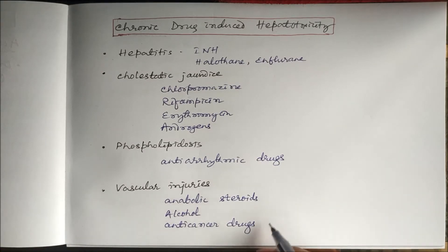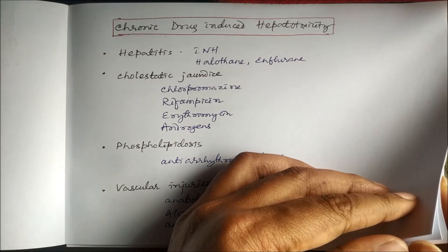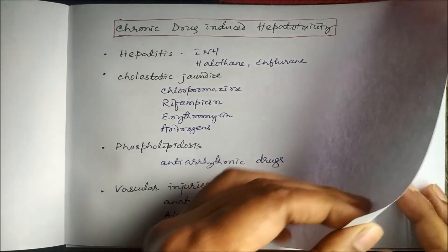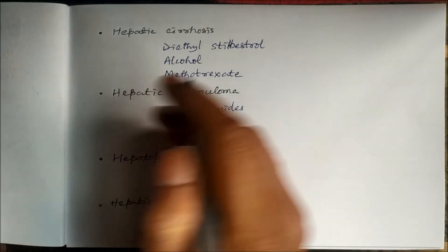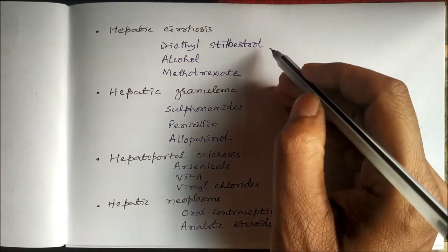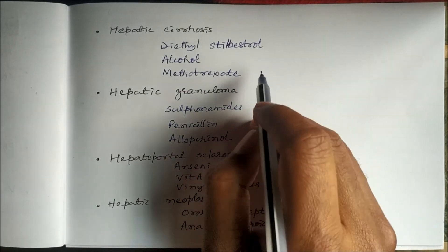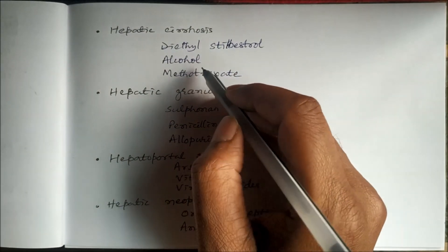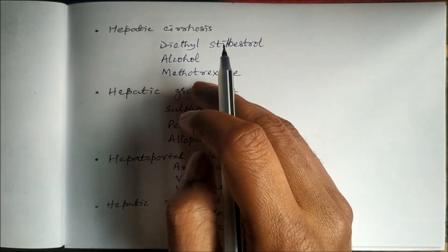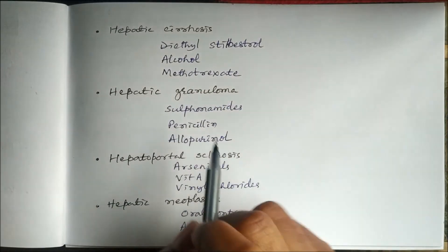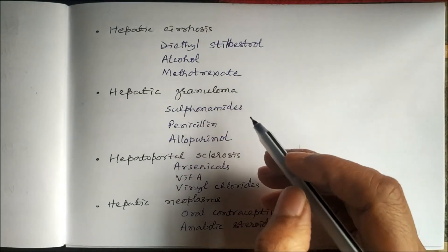Drugs like anabolic steroids, alcohol, and anti-cancer drugs cause vascular injuries leading to hepatotoxicity. Some drugs can produce hepatic cirrhosis, such as diethylstilbestrol, alcohol, and methotrexate. Alcohol can produce hepatic cirrhosis sequentially, starting from hepatitis progressing to hepatic cirrhosis.